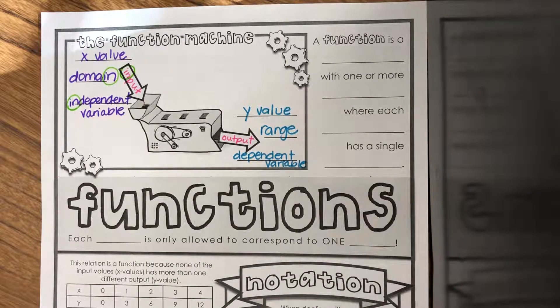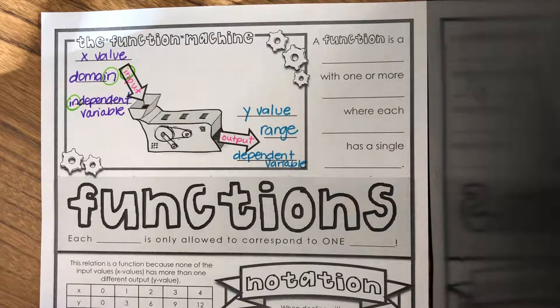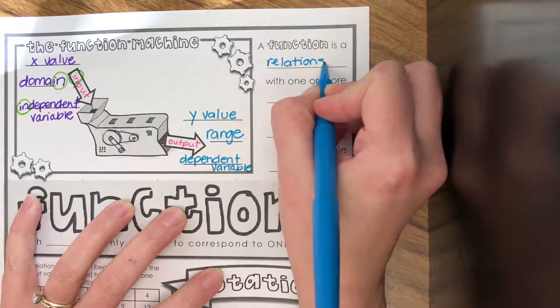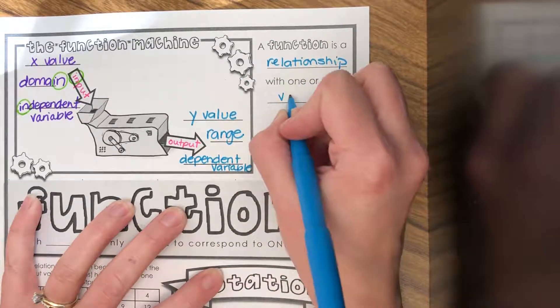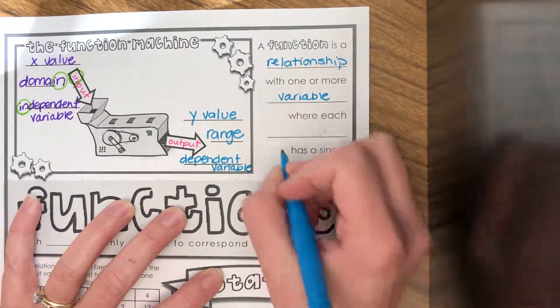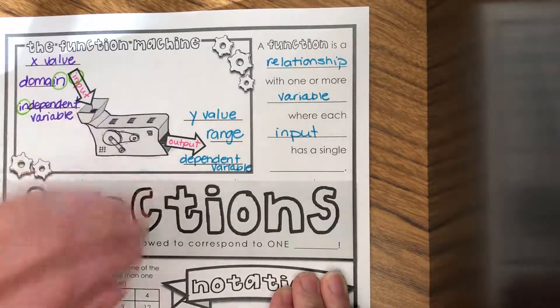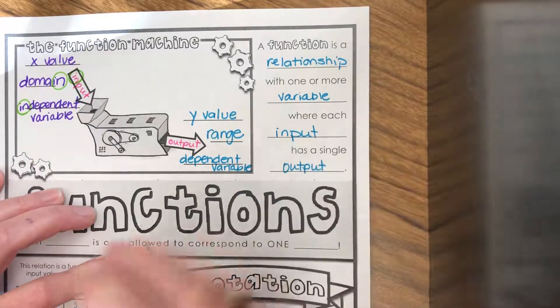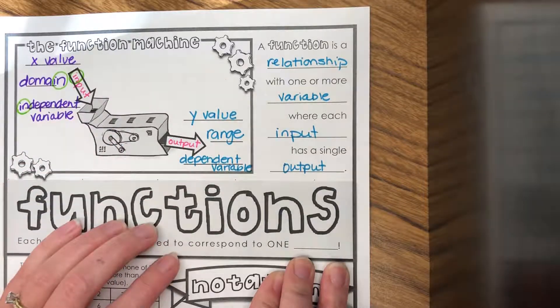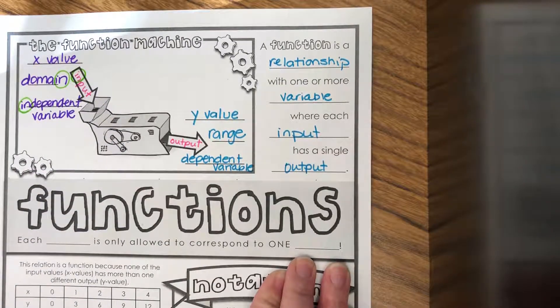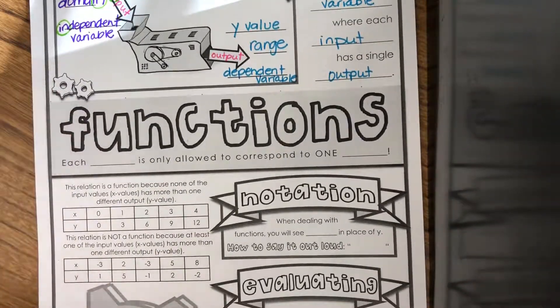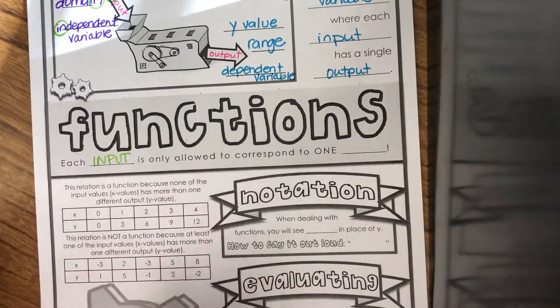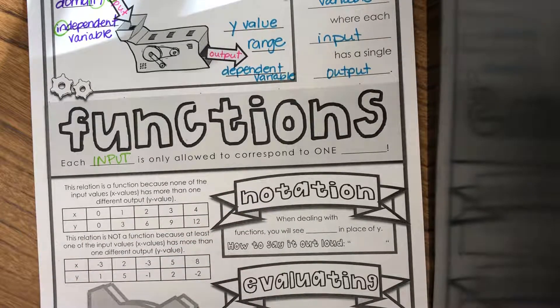Before we go any further, let's talk about what a function is. A function is a relationship with one or more variables where each input, so what we're putting in the machine, can only have one output. So every time I put a four into the machine, I'd better get the same output. Each input is only allowed to correspond, that means go with, one output.